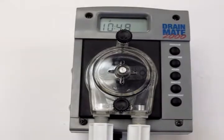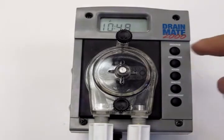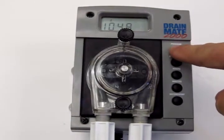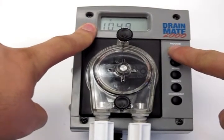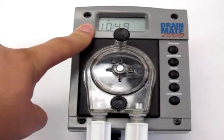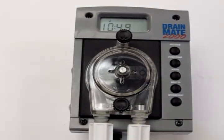Today I'm going to take you through the programming of the Drainmate 2000. To enter the program, you press and hold the program button for ten seconds until your LED screen flashes once. Once it has done so, you're in the program mode.